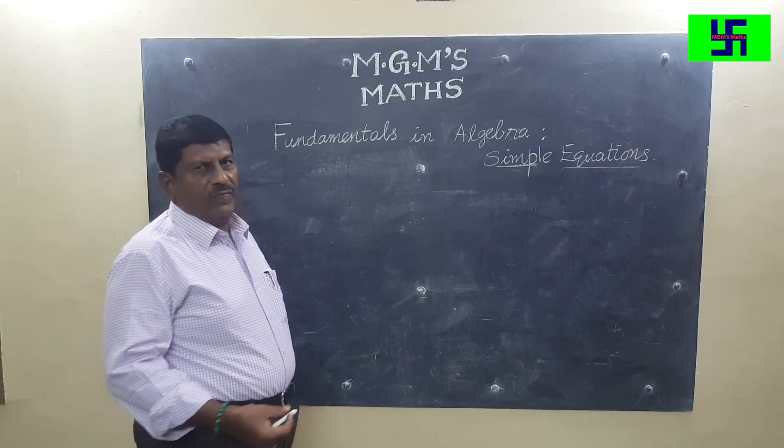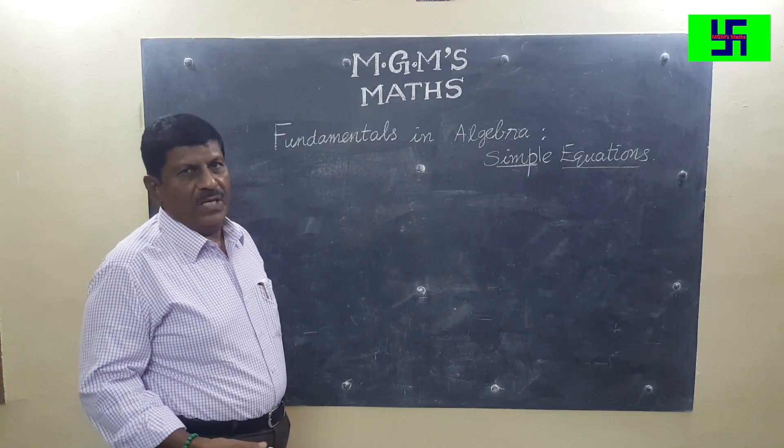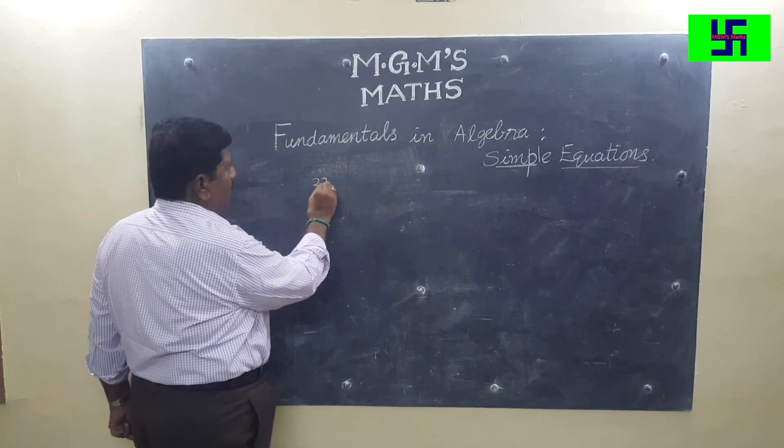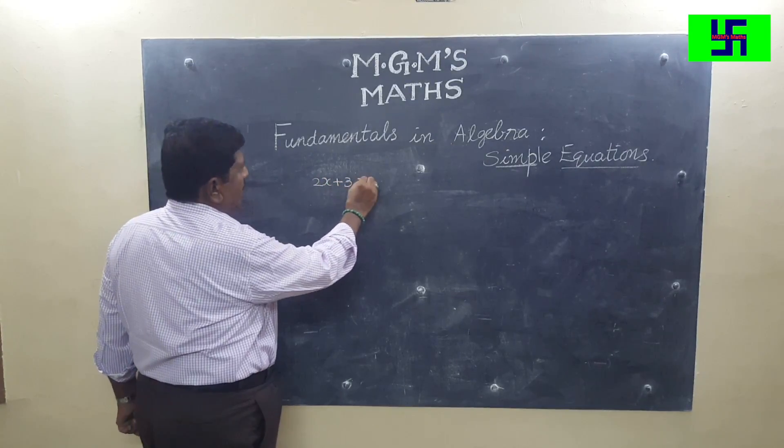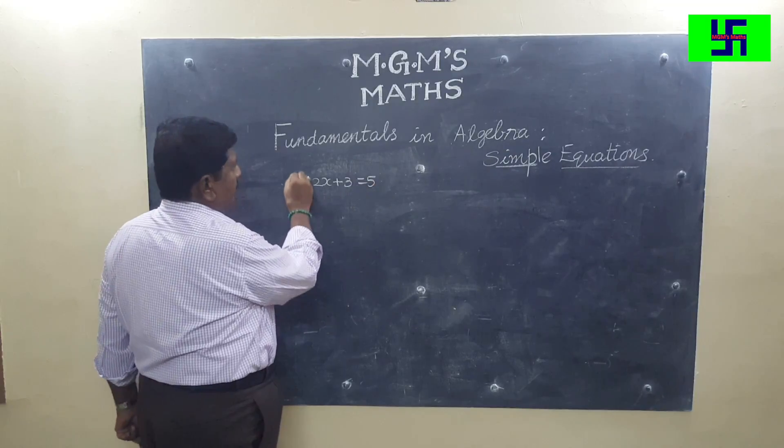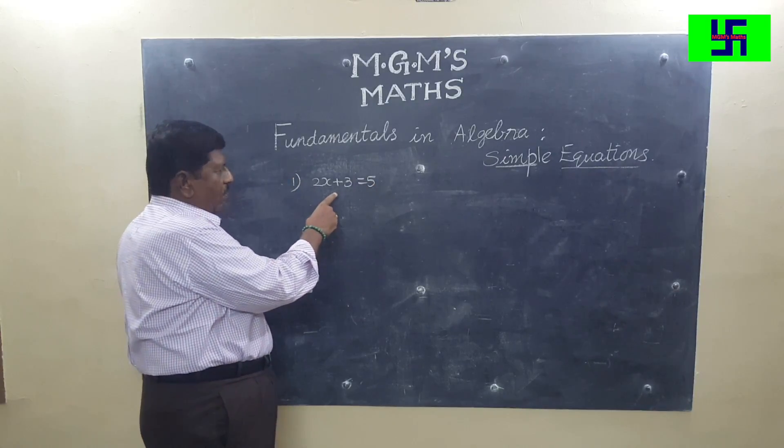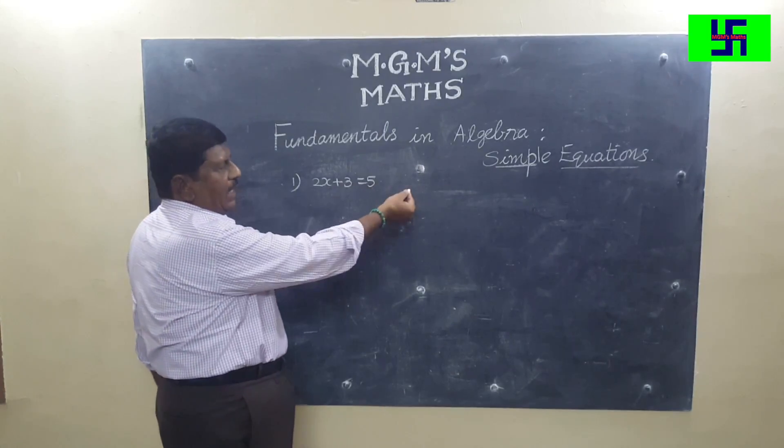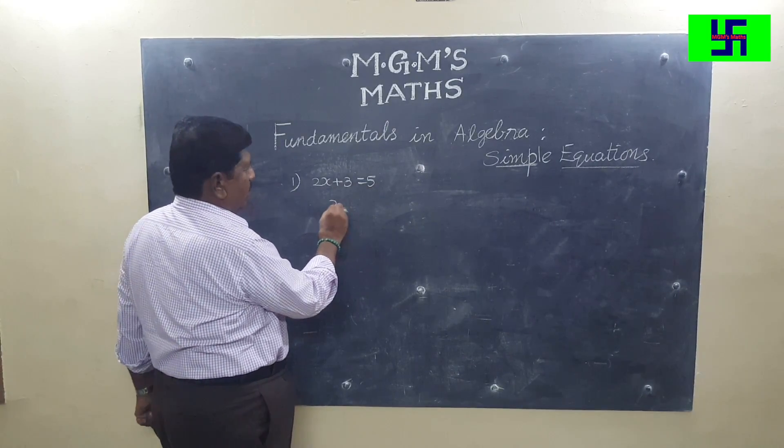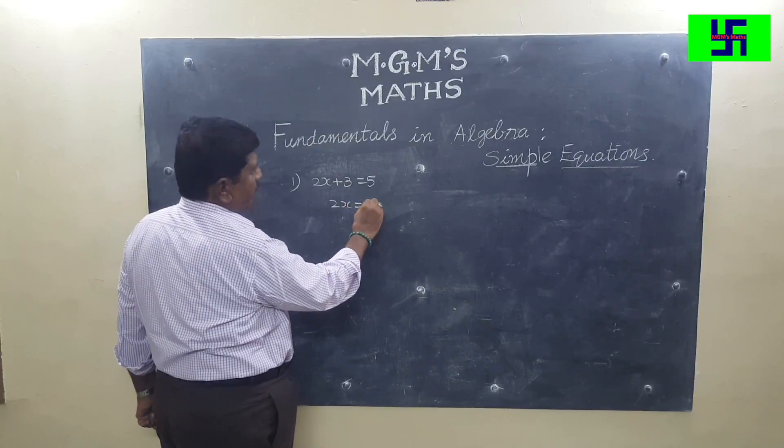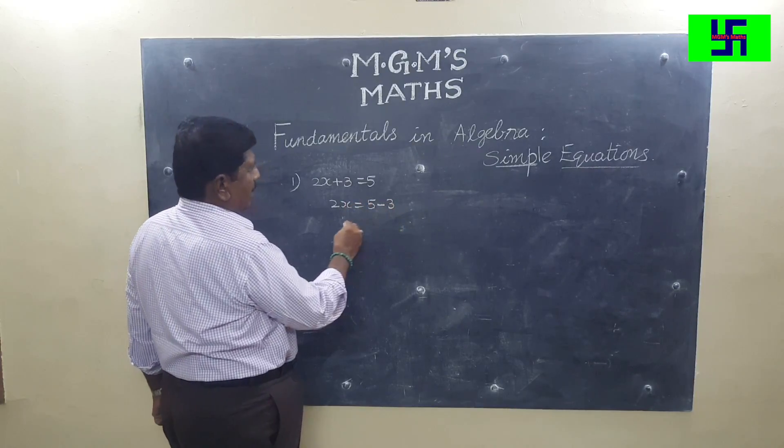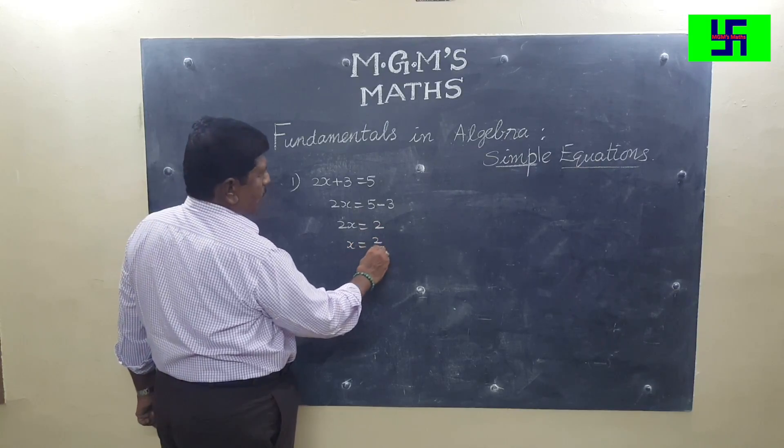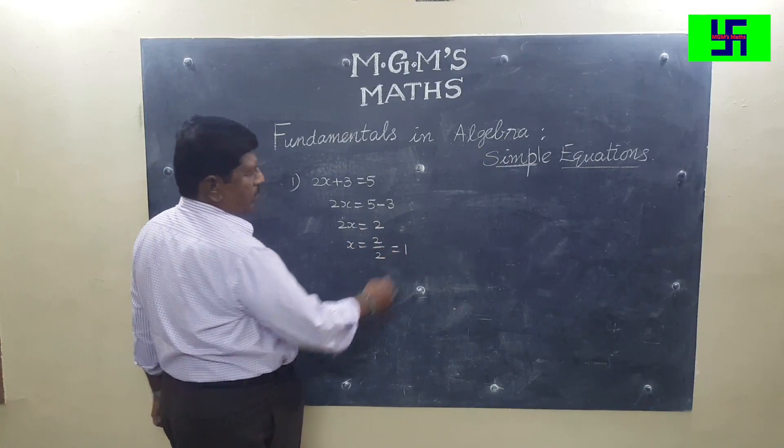Let us see a few simple problems and simple equations. There are certain rules we follow in solving simple equations. The first problem, very simple: 2x plus 3 is equal to 5. We have to find the value of x. Take 3 to the right hand side. So 2x is equal to 5 minus 3. 2x is equal to 2. x is equal to 2 upon 2 is equal to 1.